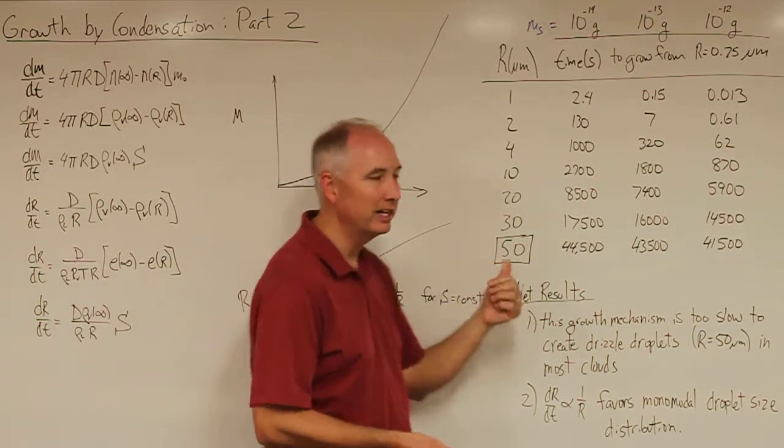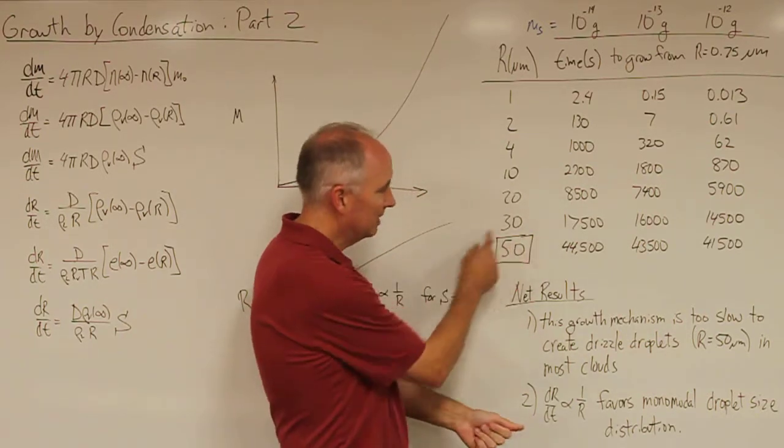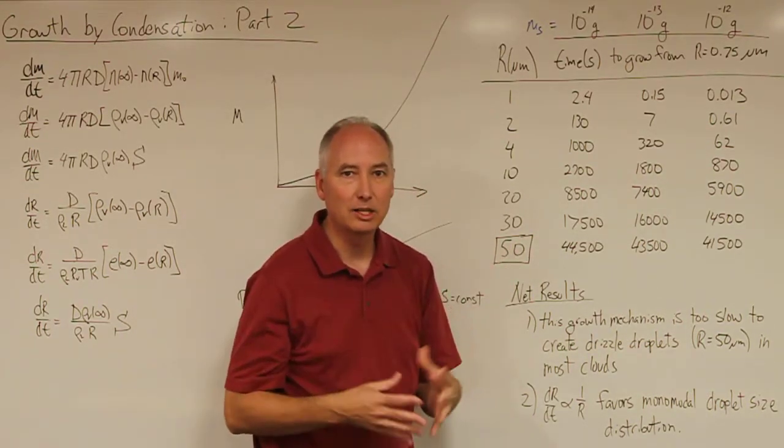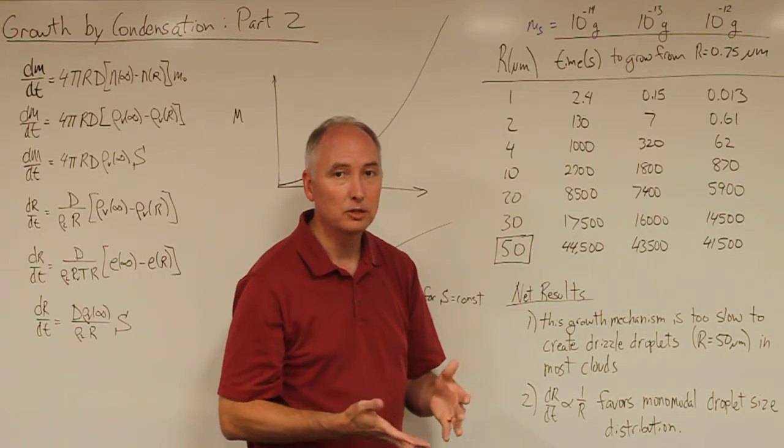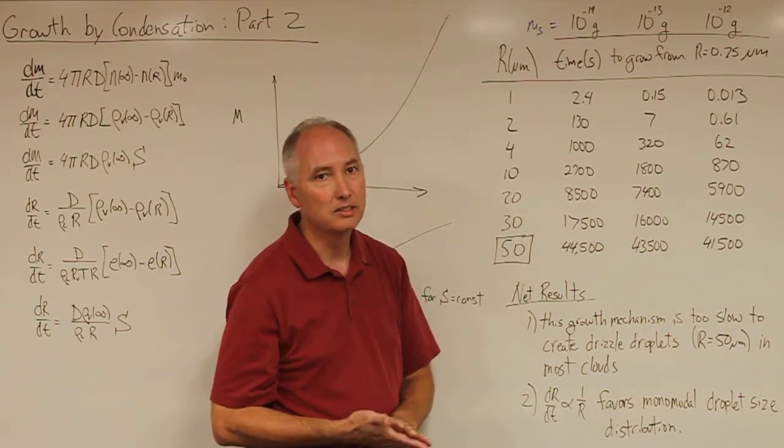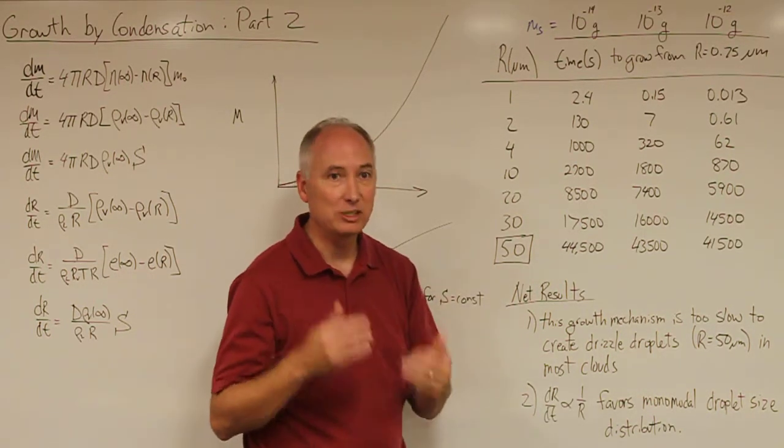And 50 micrometers radius is basically boxed here because that is equivalent to a 100 micrometer diameter droplet, and that is essentially the beginning of what we classify as drizzle.